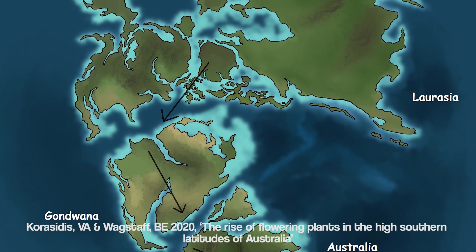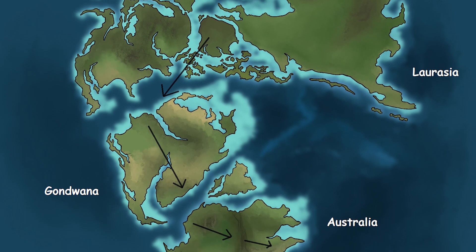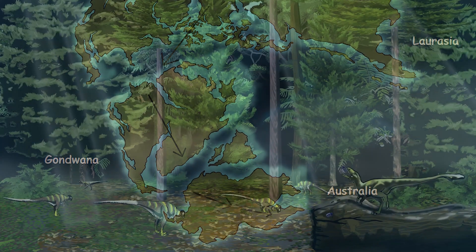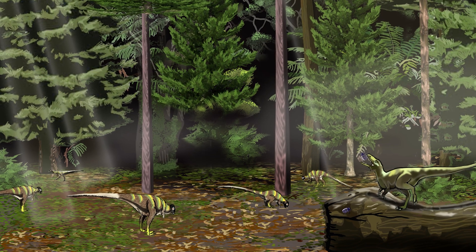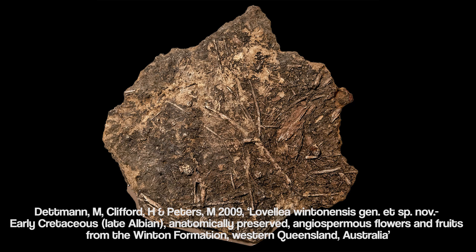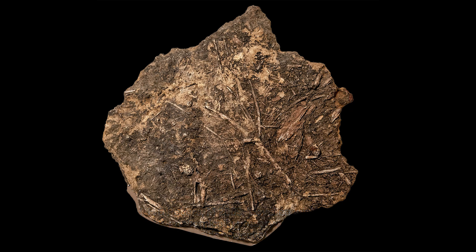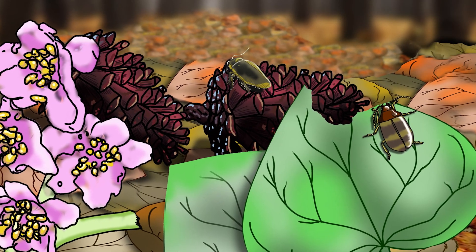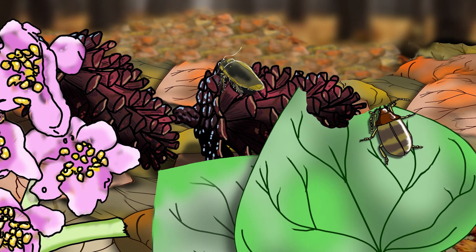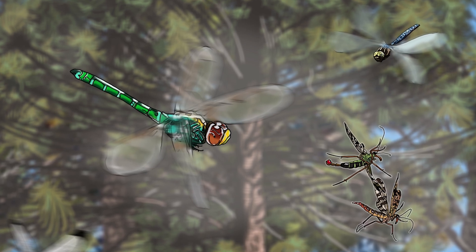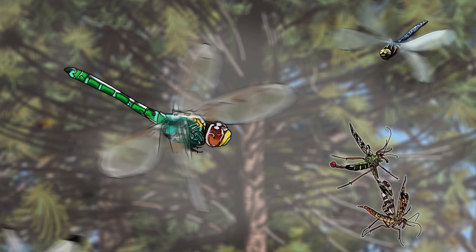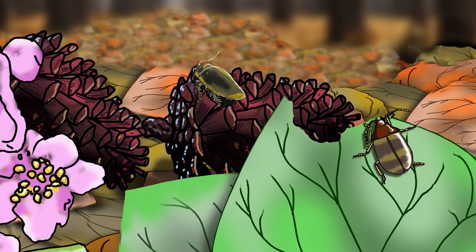The Winton region was also inhabited by flowering plants called angiosperms, which probably migrated from the equator through southern Gondwana into Australia around 125 million years ago. The Winton Formation represents the oldest record in Australia of flowering plants successfully co-dominating alongside conifers. One angiosperm, Lovelia wintonensis, had its fossil flower preserved in fossilised peat. Insect fossils are rare in the formation, but dragonflies and scorpionflies hunted overhead while beetles and cockroaches foraged in leaf litter on the forest floor, with possible bite marks on an angiosperm leaf suggesting insect feeding.